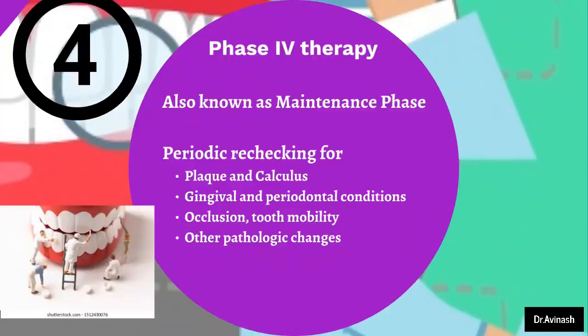Moving on to phase 4 therapy, which is also known as the maintenance phase. In this phase, periodic re-checking and re-evaluation for plaque and calculus should be done, and the gingival and periodontal condition should be examined. We look for gingival inflammation and any pockets present. Occlusion and tooth mobility should be checked, and we look for any trauma from occlusion or other pathological changes to be recorded.